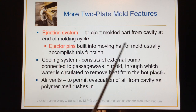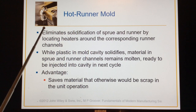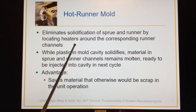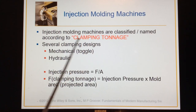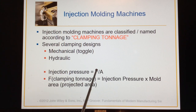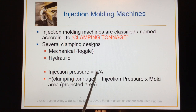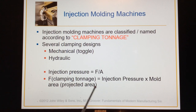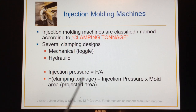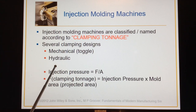These ejector pins in the moving half of the mold accomplish the function of removing the part as it comes out of the die or mold. Injection molding machines are based on clamping tonnage. The injection pressure, which is force divided by area, acts on the projected area across the whole open mold cavity. That injection pressure times the mold projected area yields the required clamping tonnage. So you have to size the mold appropriately for the machine you're using, otherwise you could obviously have problems.